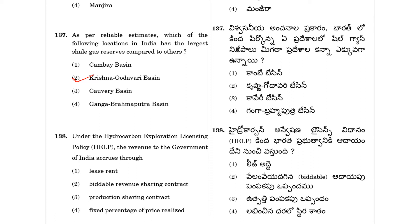Question 138: Under the Hydrocarbon Exploration Licensing Policy (HELP), the revenue to the Government of India accrues through? The answer is the biddable revenue sharing contract, option 2.